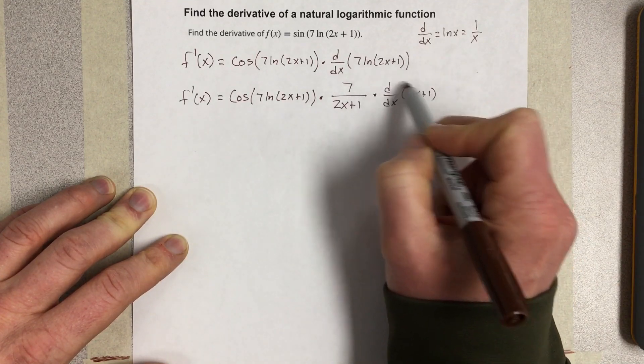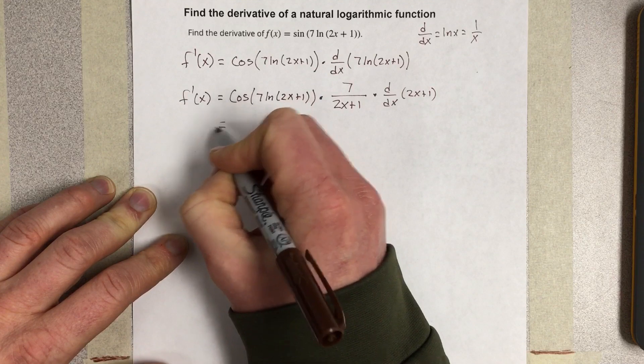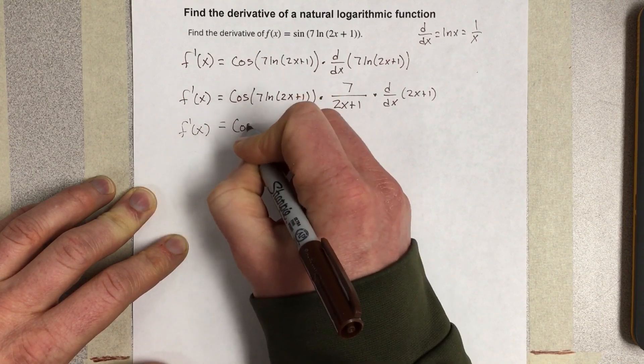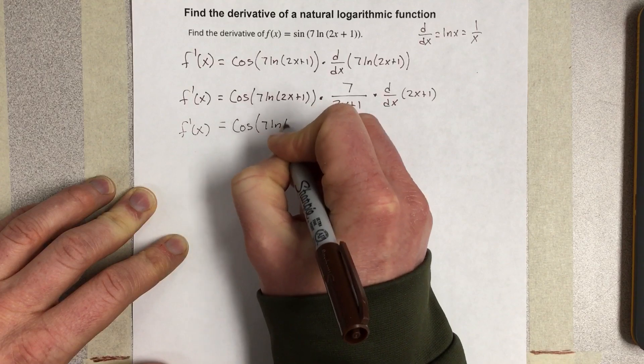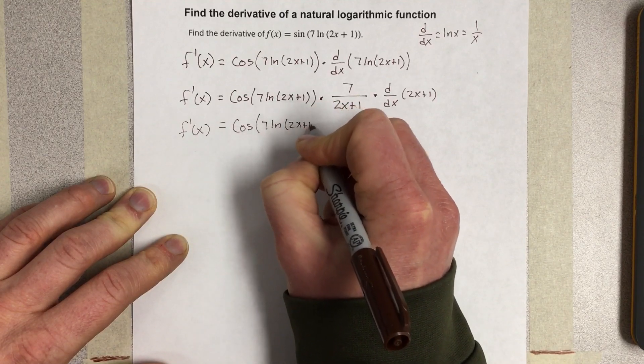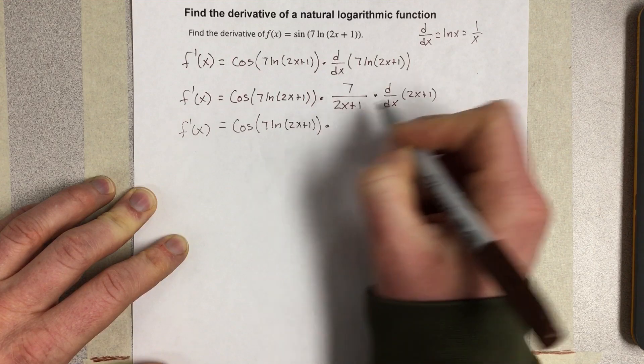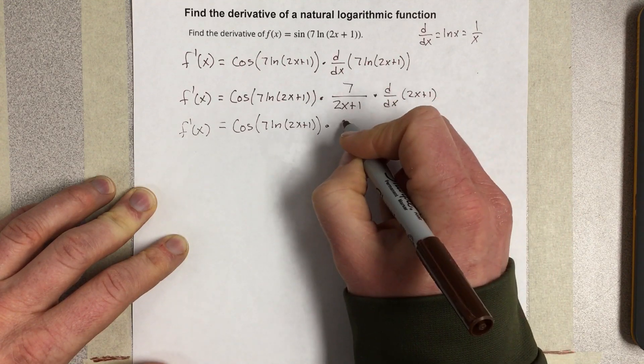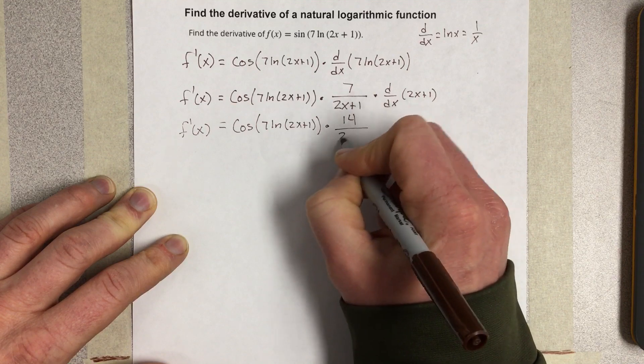We've got a chain rule there. That's what we're doing here. So we end up with f'(x) = cos(7*ln(2x+1)) times, if I do this derivative, I get 2, and then 2 times 7 would be 14/(2x+1).